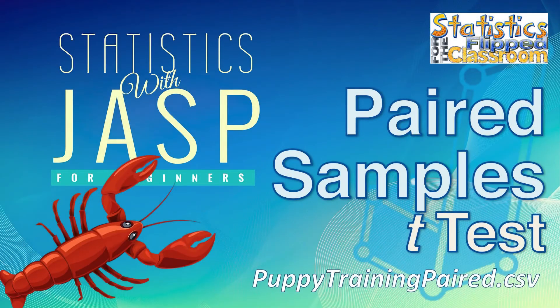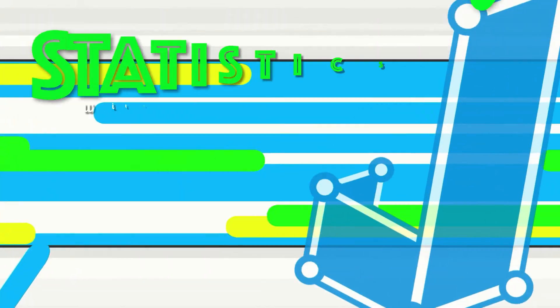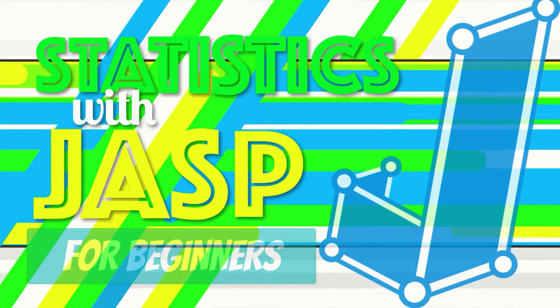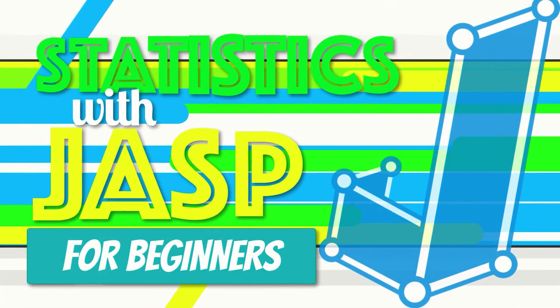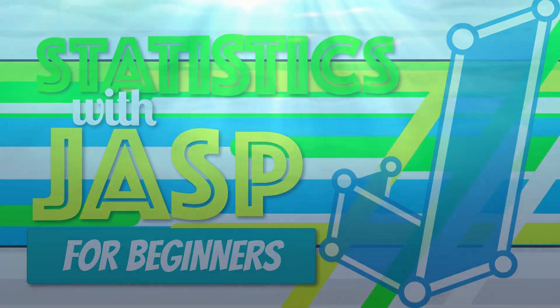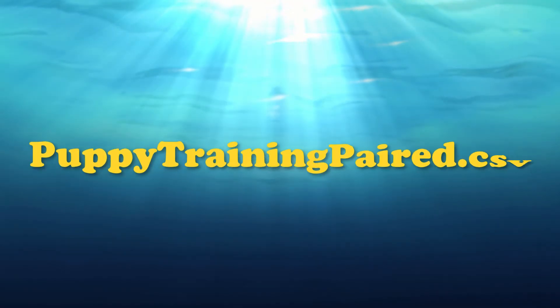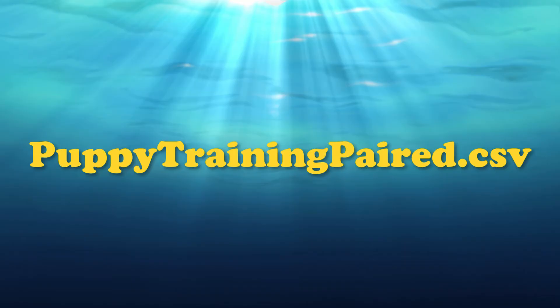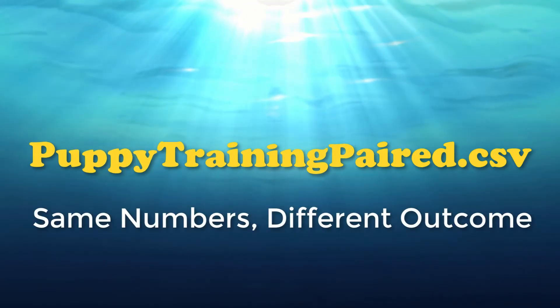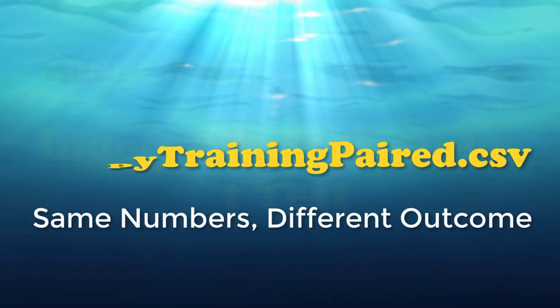So let's figure out how to do a paired samples t-test in JASP. We will be using the PuppyTrainingPaired.csv dataset, which is the same data that we used for the independent samples t-test.